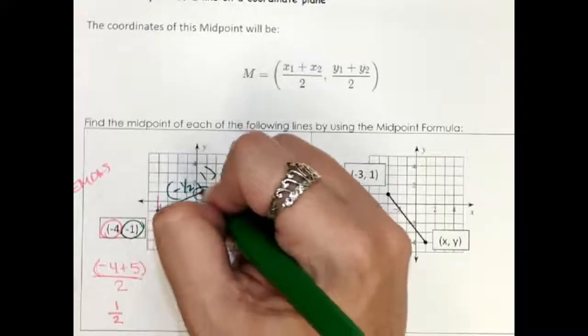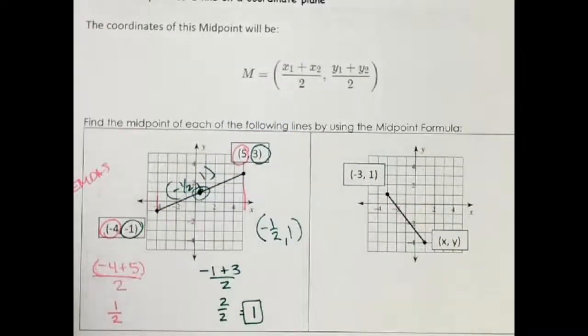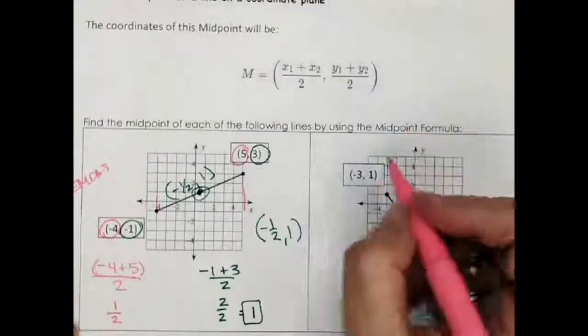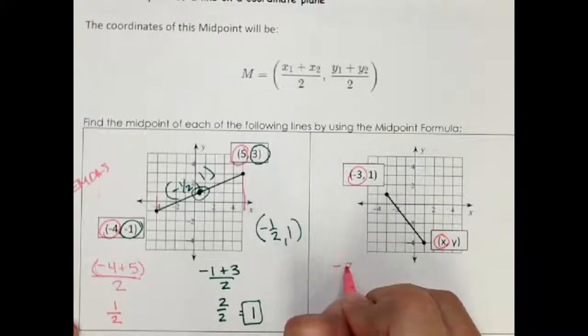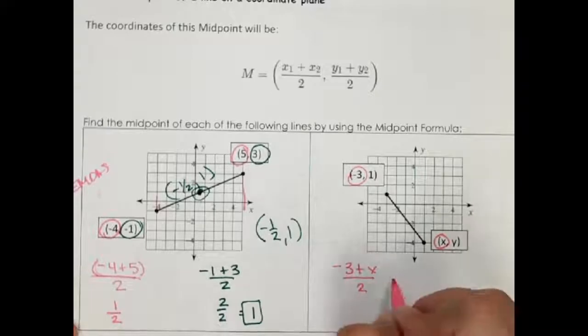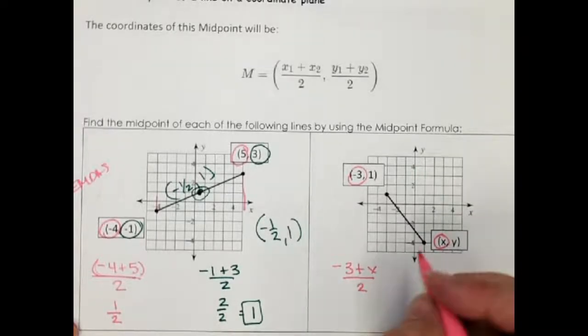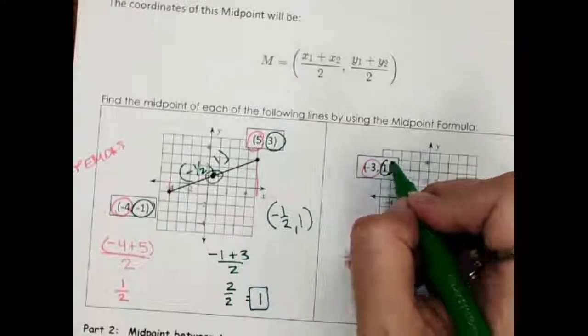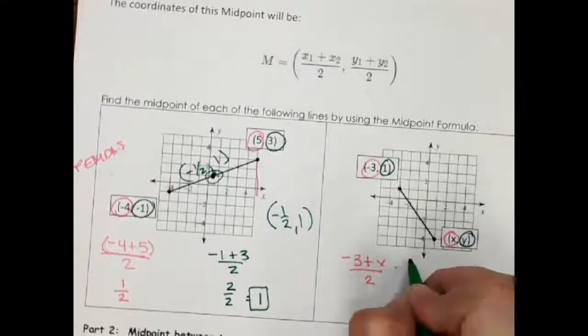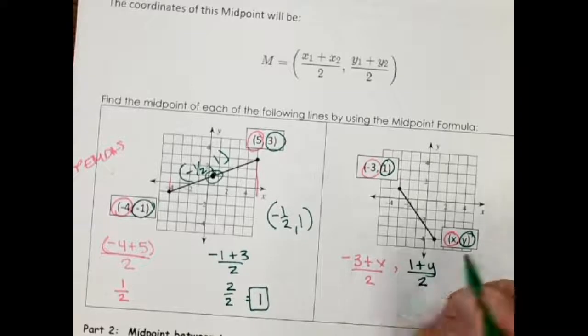And if I check on my graph, that does in fact look like the right point right there in the middle. Now we're going to do the same thing on the next one. X and x, this time it's a letter, so we're going to put that in and I can't simplify that any further so I'm going to leave it like that. And on the next one I'm going to do the y part and we're just going to leave it as an expression like that.